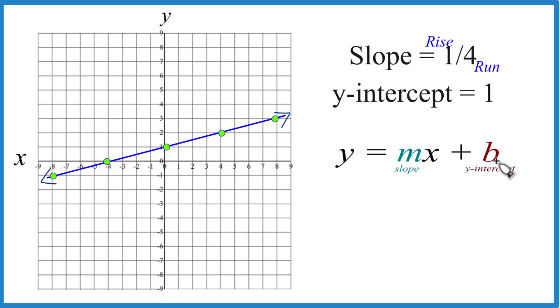If you wanted to write the equation, b, that's the y-intercept, that's just one. m is the slope, which is one-fourth. And then we put our x in there, and we can say y equals one-fourth x plus one, which is the equation for the line we just graphed.